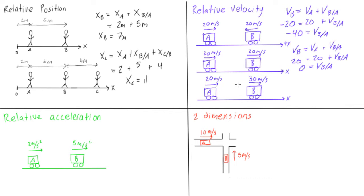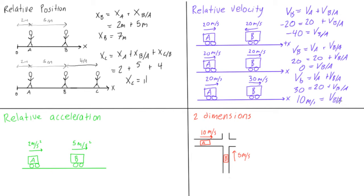What if both travel in the same direction but at different speeds? VB = VA + V(B/A). If A is going 20 m/s and B is going 30 m/s, subtracting 20 from both sides gives 10 m/s equals the velocity of B with respect to A. That makes intuitive sense — if B is going a little faster, from your car it looks like B is speeding away at 10 m/s, even though from the ground they appear to be doing 20 and 30 m/s respectively.